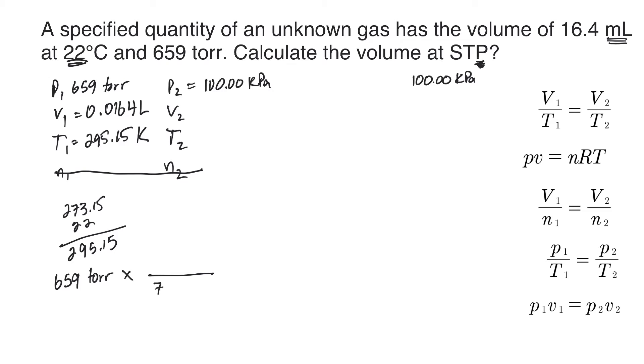659 torr times, okay, 760 torr is the same as 101.325 kilopascals. So let's convert that. It's got to be like 95 or something like that. 659 times 101.325 divided by 760. 87, I wasn't that close. 87.859, etcetera. So instead of the torr there, I'm going to put 87.859 kilopascals, right, kilopascals.